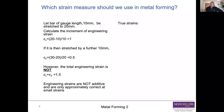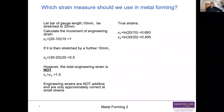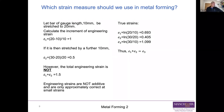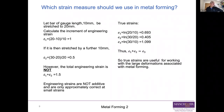In contrast, the true (logarithmic) strain for the first increment is ln(20/10) = 0.693; for the second increment, ln(30/20) = 0.405; and for the total, ln(30/10) = 1.099. Notice that 0.693 + 0.405 = 1.099: E₁ + E₂ = E₃. True strains are additive, which makes them quite useful for working with the large deformations associated with metal forming.